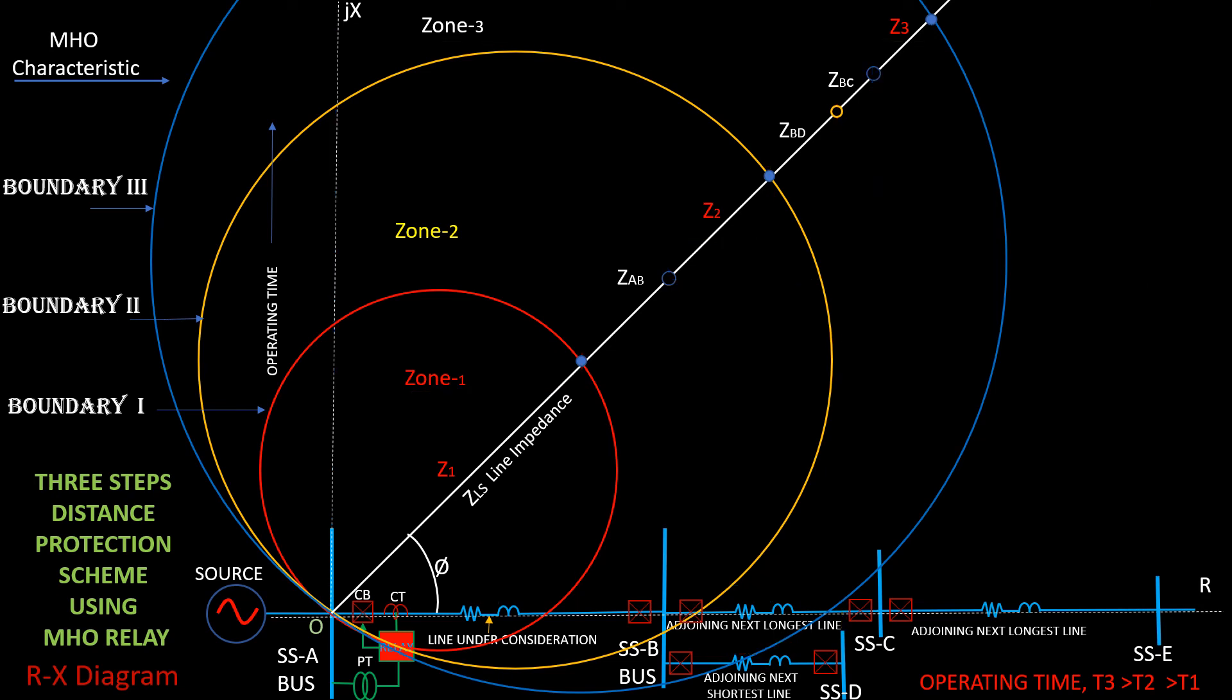This was the MHO characteristic of 3 step distance protection relay. Relay will calculate fault current and fault voltage to obtain impedance during fault.